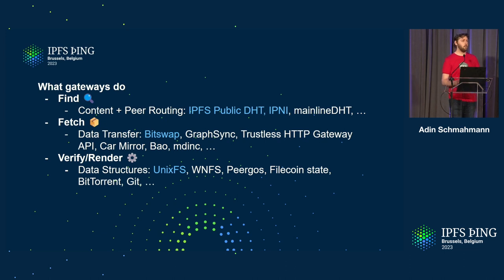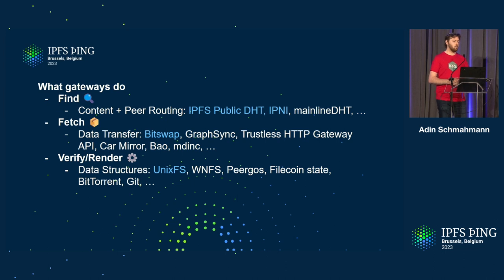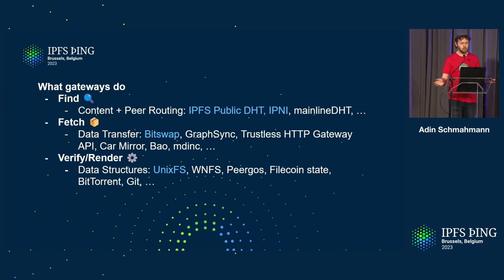Gateways have a few different jobs, somewhat simplified: I would like to find the stuff, find who has what I want, get it from them, verify it's correct, and then render it as my JPEG or website or video. Finding is things like content and peer routing; data transfer and fetches for data transfer; and then verifying and rendering is basically the IPLD and processing work. The things in blue are what some people associate with IPFS, because these are what they see running on big public gateways run by Protocol Labs or Cloudflare. But these other things are all valid parts of the IPFS ecosystem as well.